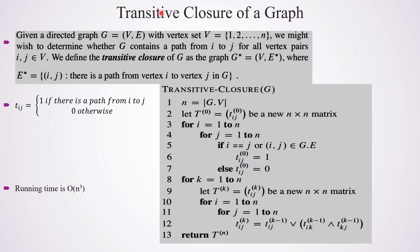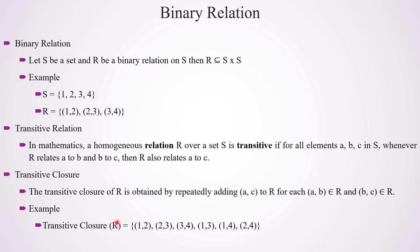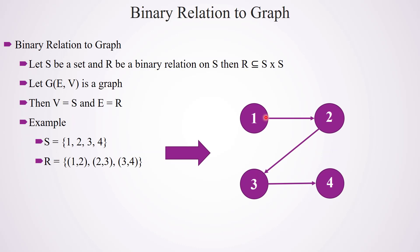Here is the definition of transitive closure of a graph. Let a directed graph G = (V, E) with vertex set V = {1, 2, ..., N}. We may wish to determine whether G contains a path from i to j for all vertex pairs i, j element of V. We define the transitive closure of G as graph G* = (V, E*), where E* = {(i,j) : there is a path from vertex i to j in G}. In the earlier example, the first three elements are already in the relation. There are three more elements (1,3), (1,4), and (2,4). The element (1,3) means there is a path from 1 to 3 in the graph — there is no direct edge from 1 to 3 but there is a path.